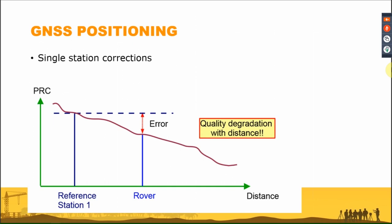This is single station correction. Since errors depend on distance, the mitigation of errors also depends on how large the distance is between the reference station and the rover. A graphic shows that the greater the distance between the reference station and the rover, the bigger the error — meaning there is a quality gradation of position accuracy. For example, corrections from a radio base-rover configuration are generally reliable up to 30-35 kilometers, depending on the area.